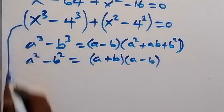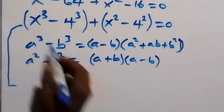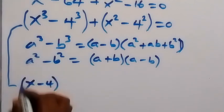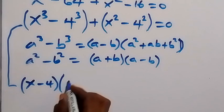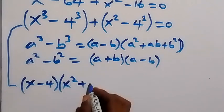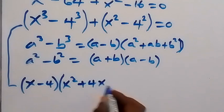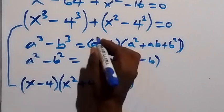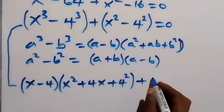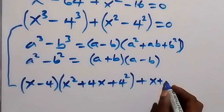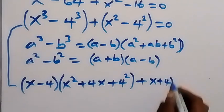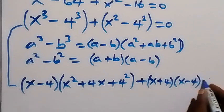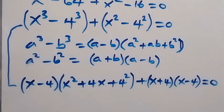Applying these identities, the first bracket becomes (x − 4)(x² + 4x + 4²), and the second bracket — the difference of two squares — becomes (x + 4)(x − 4), and all of this equals zero.